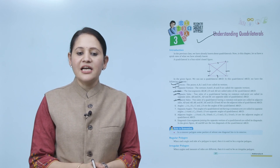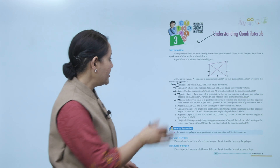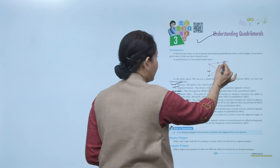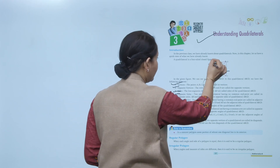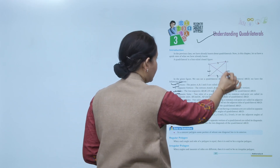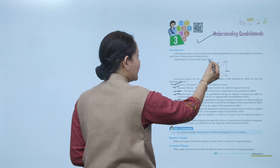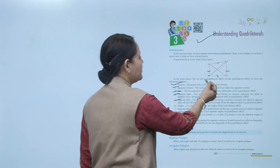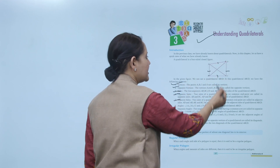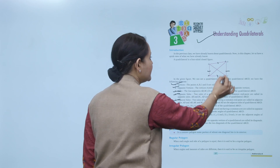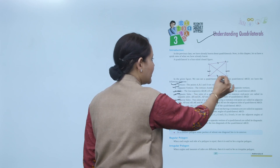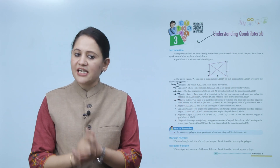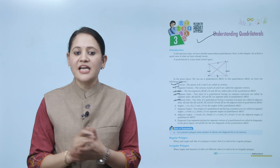Adjacent sides: AD and DC are adjacent, AD and AB are adjacent, AB and BC are adjacent, and BC and DC are adjacent. Like this, these are the adjacent sides.